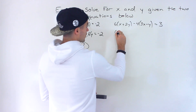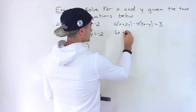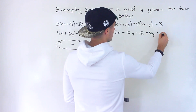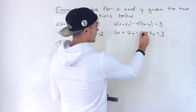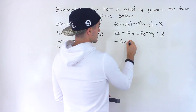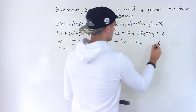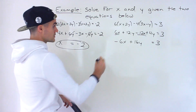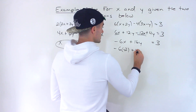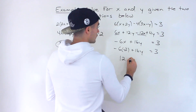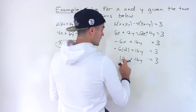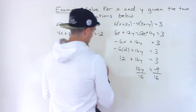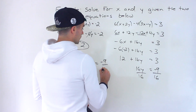For the second equation, expanding gives 6x + 12y - 12x + 4y = 3, which simplifies to -6x + 16y = 3. Now substituting x = -2: -6·(-2) + 16y = 3, so 12 + 16y = 3, giving 16y = -9, and therefore y = -9/16.